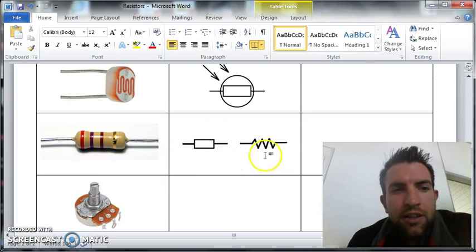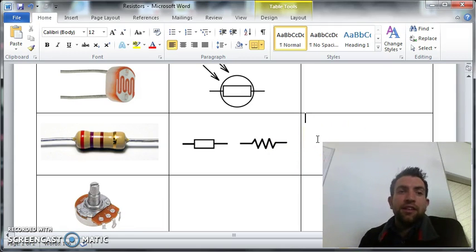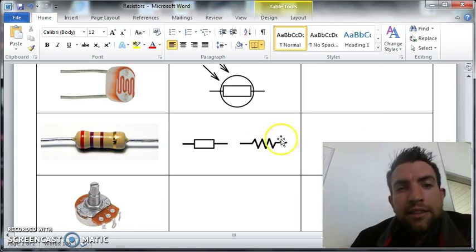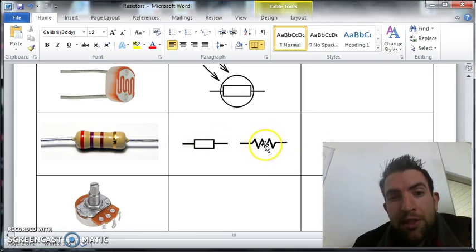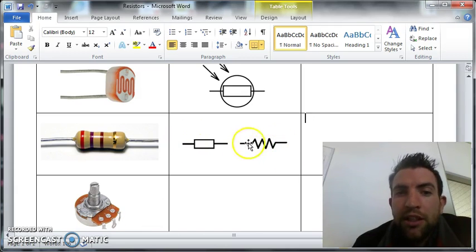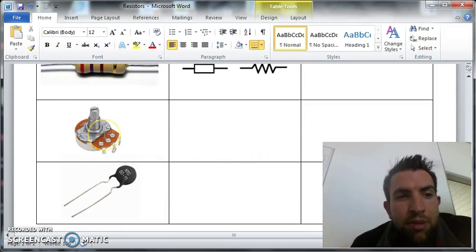This is a symbol for a fixed resistor. A fixed resistor means the value cannot change. You've got two symbols - you can see either of those, they both mean the same thing. This is the European standard and that one is the American version.